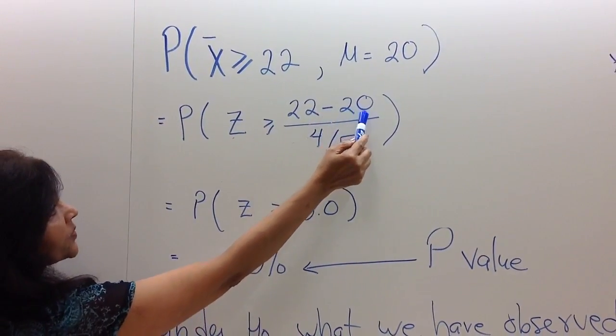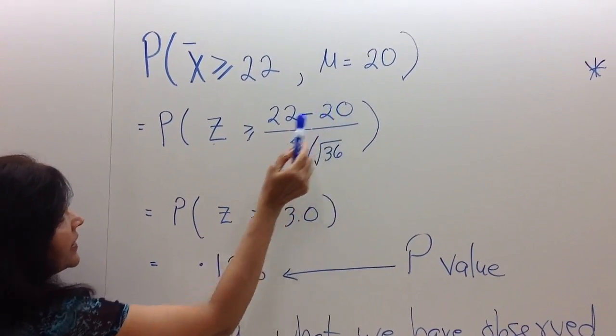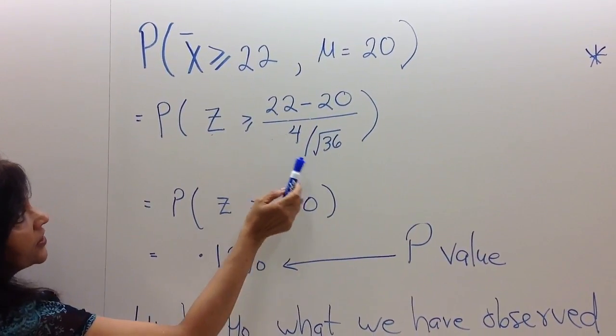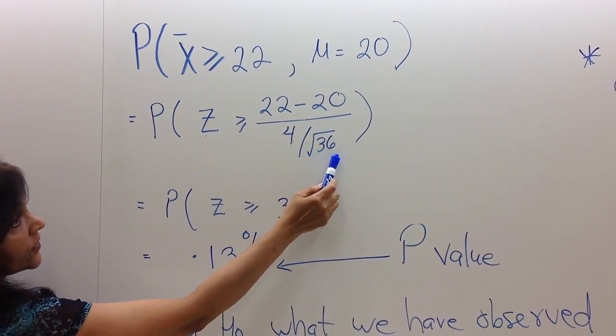Well, from 22 I will subtract the mean, which is 20, and I will divide by the standard deviation of X̄, which is sigma over square root of n.